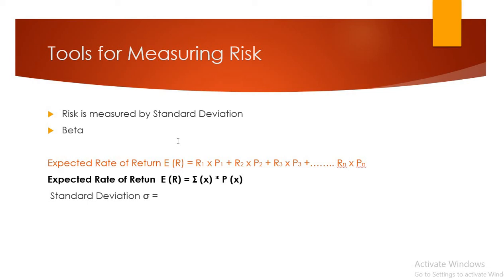When we look at the expected return versus the actual return, the variations that occur are captured by variance and standard deviation. The formula for expected rate of return is: R1×P1 + R2×P2 + R3×P3 ... + Rn. This is the expected rate of return formula.